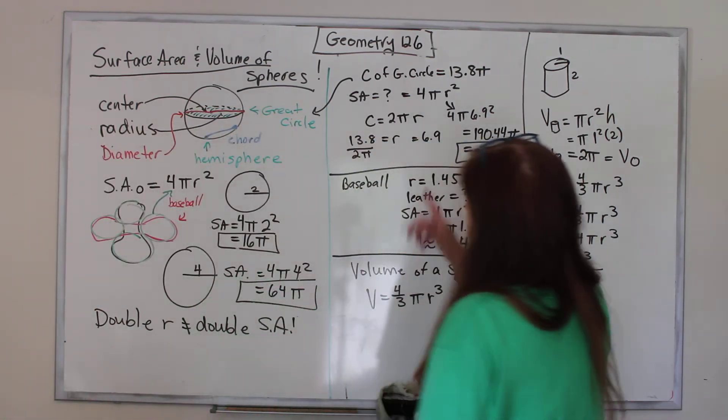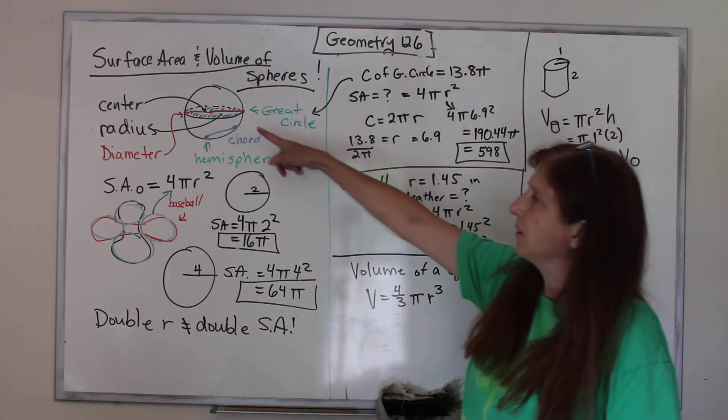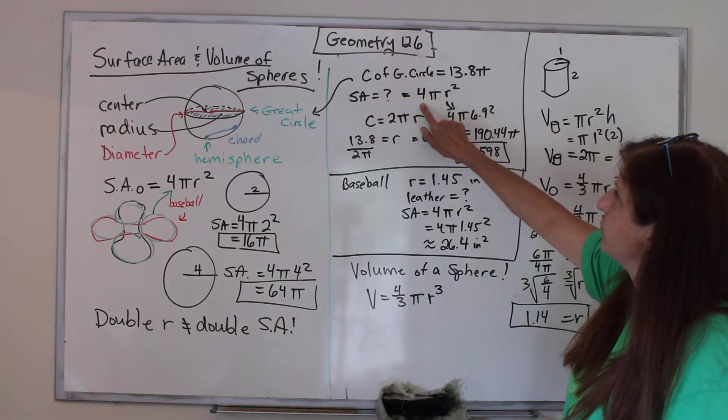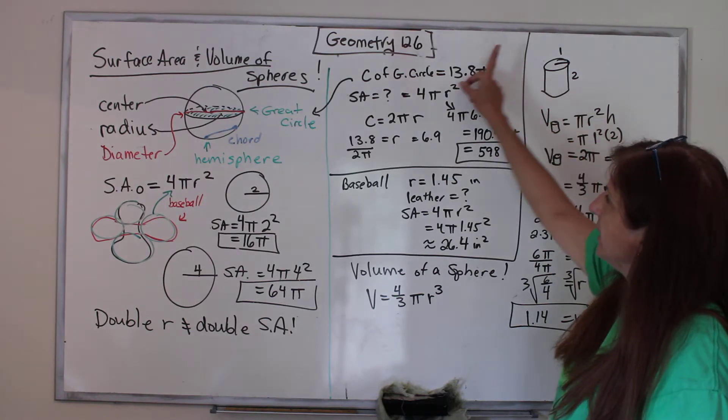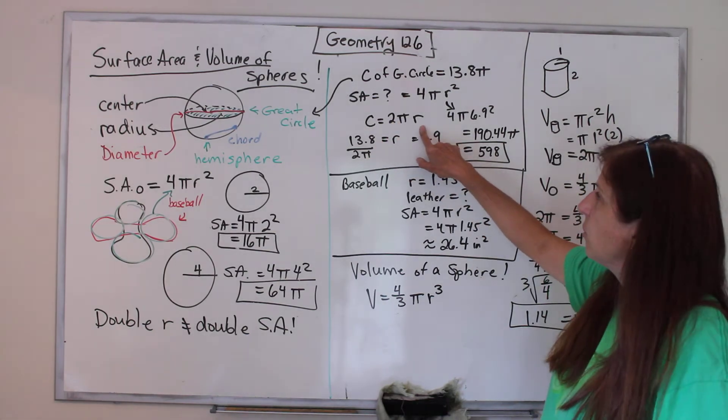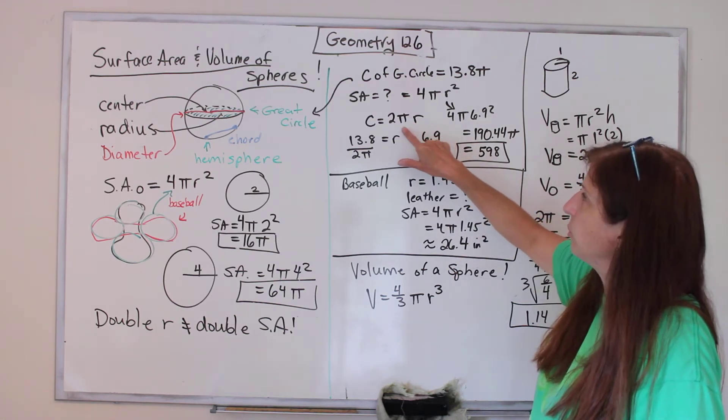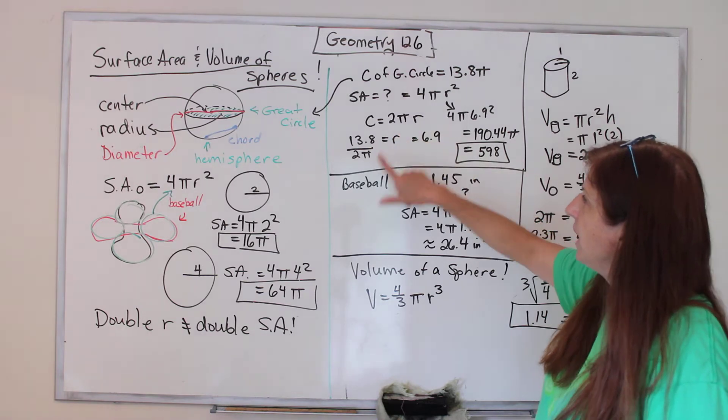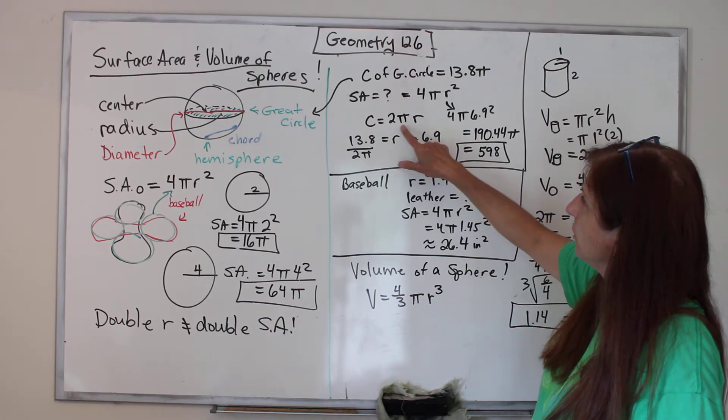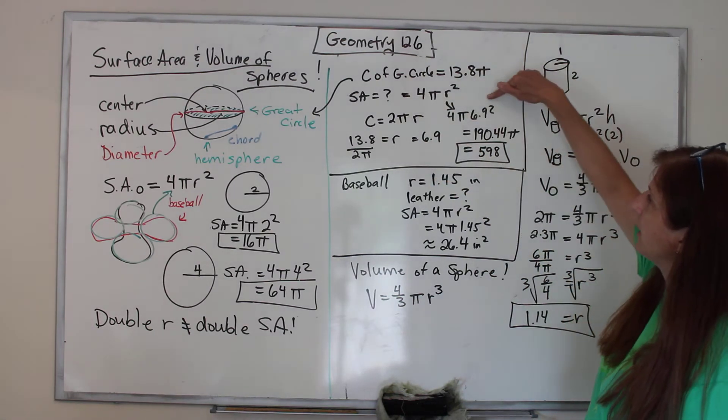Here's a problem. They tell us that the circumference of the great circle is 13.8π. They want to know the surface area. We know the formula for surface area is 4πr². We don't know the radius, so we use this formula: circumference equals 2πr. We can solve for it. Divide both sides by 2π, and that equals 6.9.